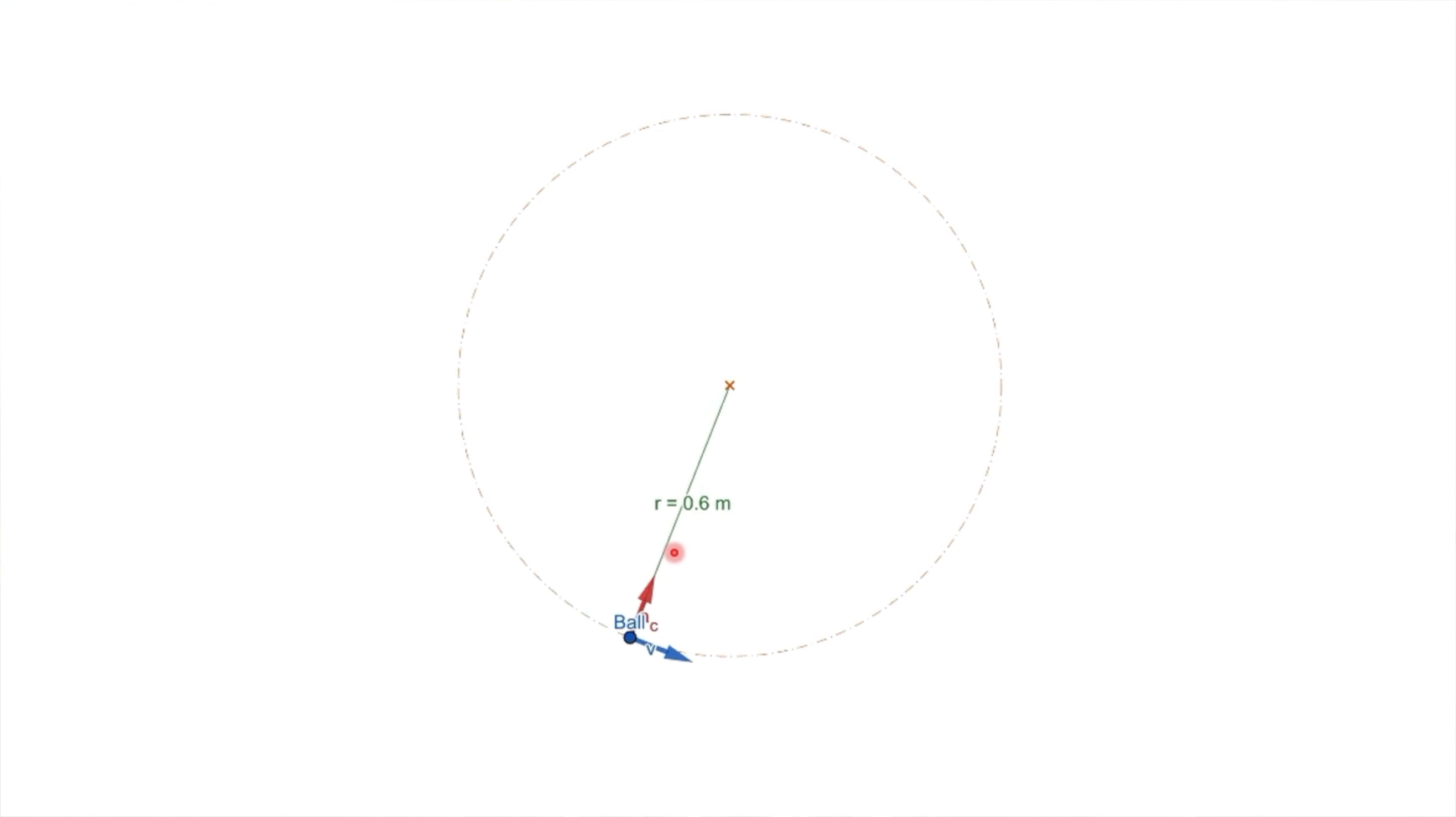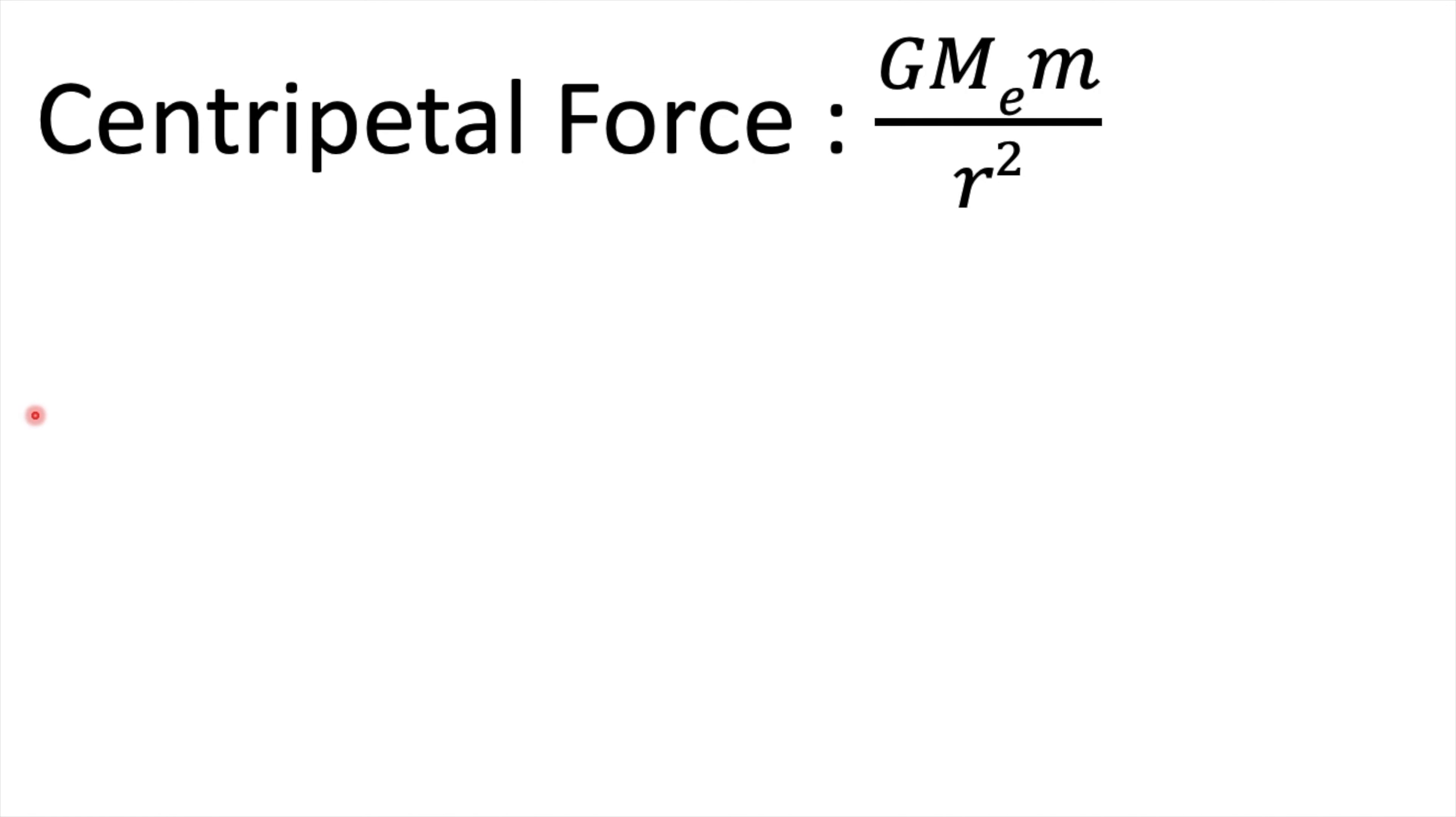For a body to orbit around the earth, earth's gravitational force is balanced by the centrifugal force of the orbiting body.